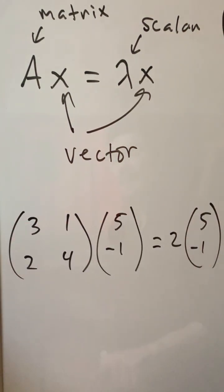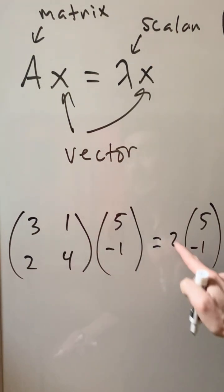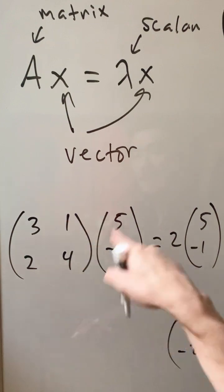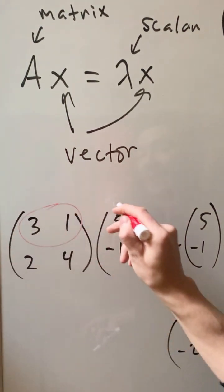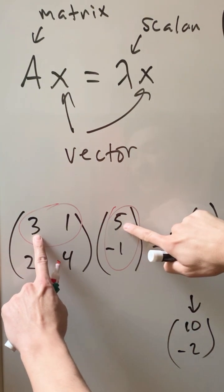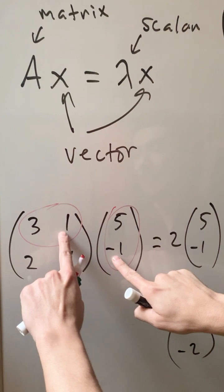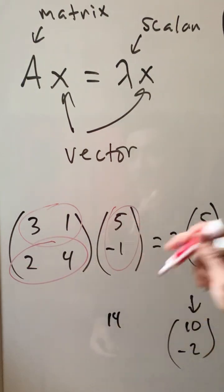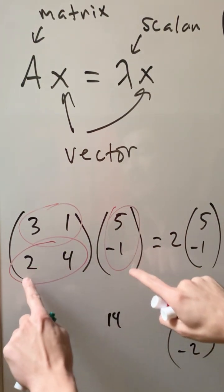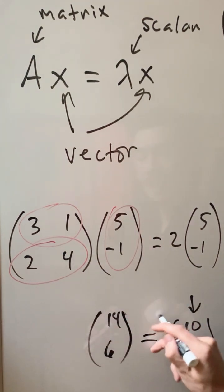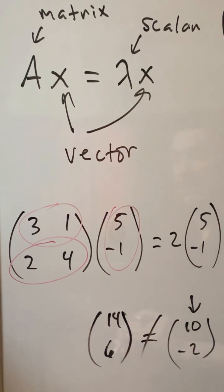Here we have a matrix, the same vector, and here is a different scalar. Let's see if this works. Let's do the easy side first — distribute the 2 to get 10 and negative 2. Now let's play on the matrix side. Going this row times this column: we have 15 and negative 1, which is 14. Then this row times this column gives 10 minus 4, which is 6. These objects are not equal, so this doesn't work.